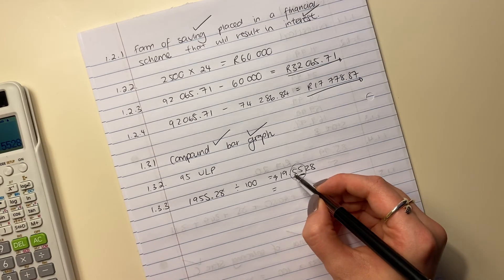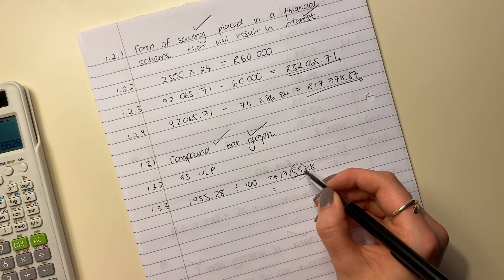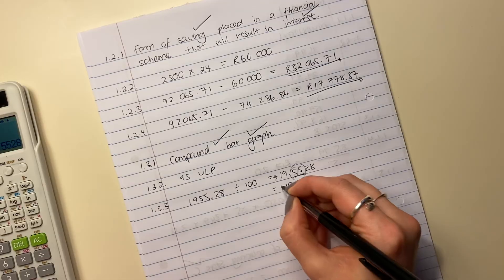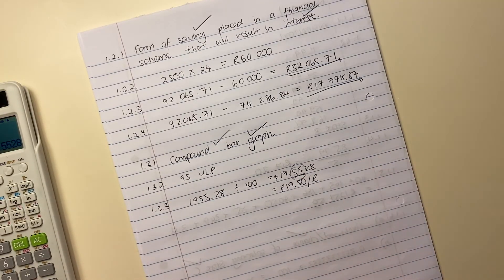You should be able to see that this over here, it indicates to us that this 5 indicates to us that it's close to the 50 cents. If this was a 7, and that was 8, like it was 78 cents, then we would round up. But it's closer to being 19 rand 50. And that is per liter.